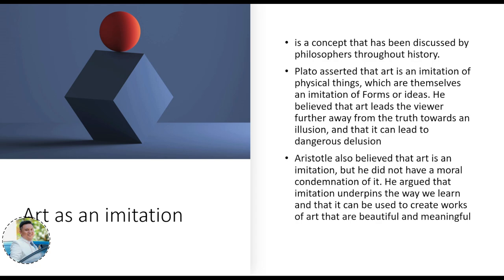Number one additional perspective is art as imitation. When we see art as imitation, it's a concept discussed by philosophers throughout history. Plato asserted that art is an imitation of physical things, which are themselves an imitation of forms or ideas. He believed that art leads the viewer further away from the truth toward an illusion, and that it can lead to dangerous delusion. Aristotle also believed art is imitation, but without moral condemnation — he argued that imitation underpins the way we learn and can create works that are beautiful and meaningful.